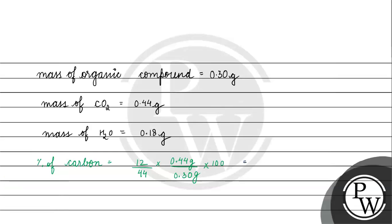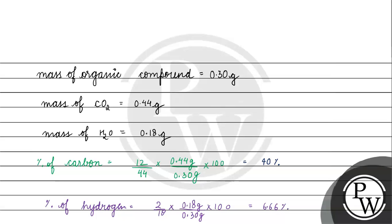Now for the percentage of hydrogen: it equals (2/18) multiplied by mass of water which is 0.18, divided by mass of organic compound which is 0.30, multiplied by 100. This equals 6.66%.